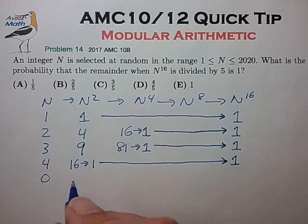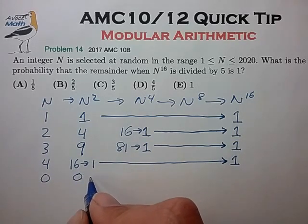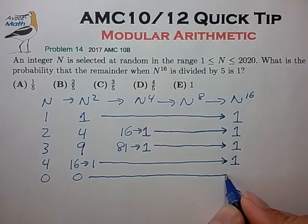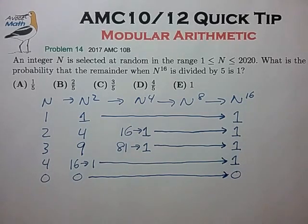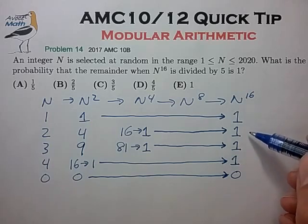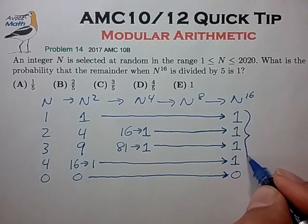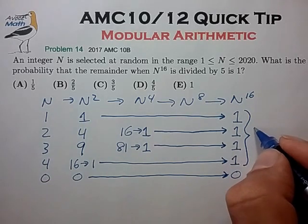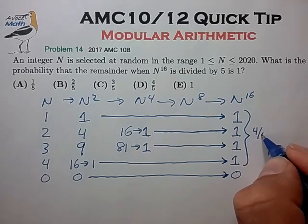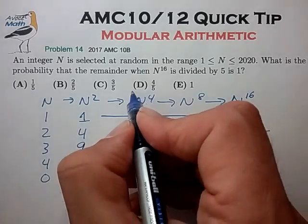So it seems like the only case that will leave us with something other than 1 is 0. Because n squared and all squares after that will again leave us with 0. So of the 5 equiprobable cases, only 4 of the cases will give us 1 for a probability of 4 fifths for choice D.